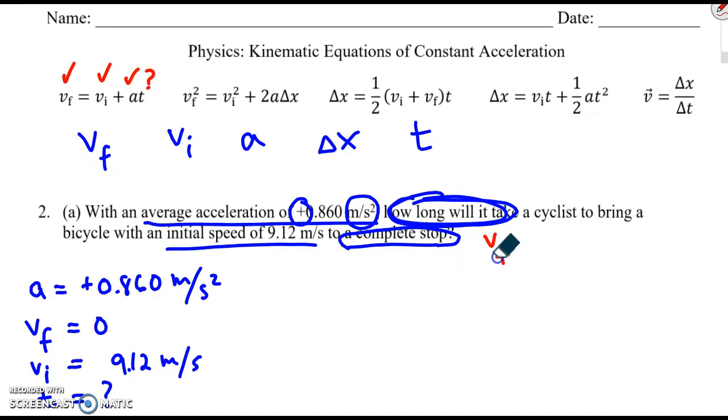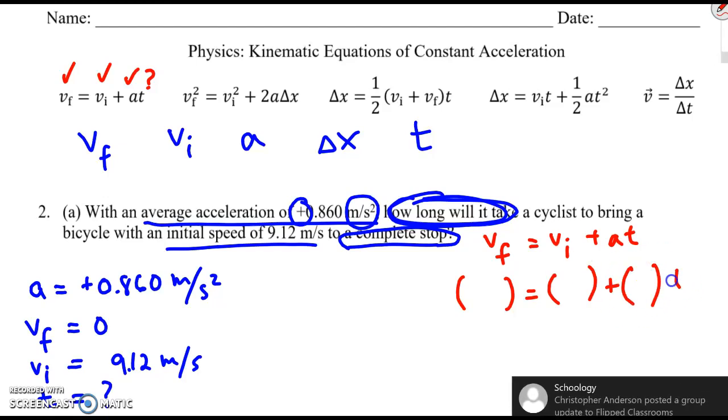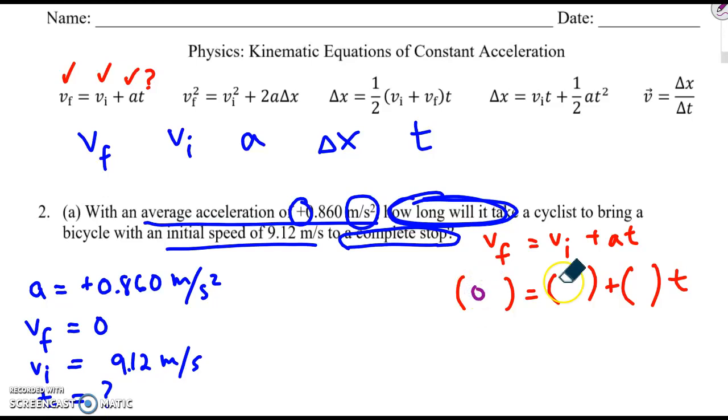We write the equation as it appears. And then we plug in the values that were given. We're not going to plug in for t. That's our unknown. The final velocity is zero. The initial velocity is 9.12. And again, I don't know yet if it's positive or negative. I can't think that through just yet. Well, I could, but I'm struggling. And then the acceleration is 0.86.